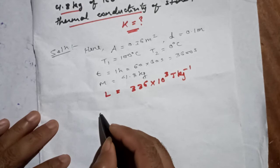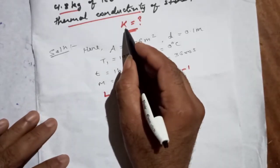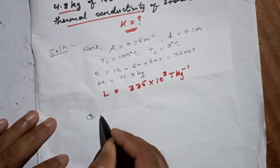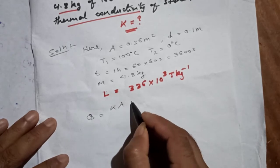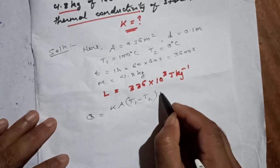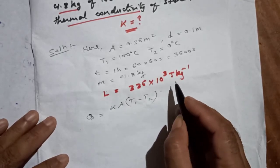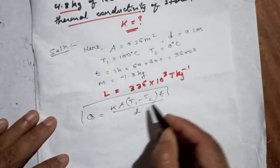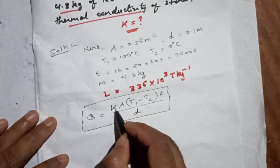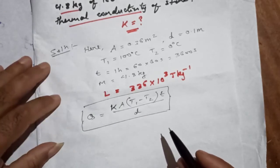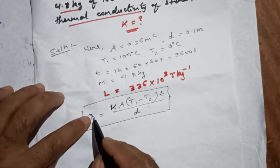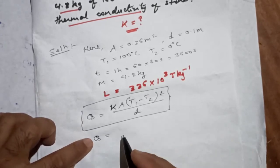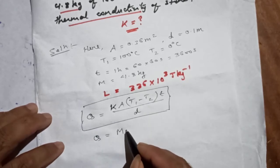Now, how can we find k? We know that Q equals k·A·(T1 − T2)·t divided by d, where t is the time and d is the thickness. We want to find k. But first we need to know Q. There is another expression: Q equals m × L — the mass of the substance times the latent heat of fusion.